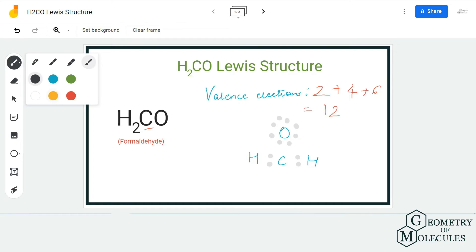So what we are going to do is shift this pair of electrons from oxygen between oxygen and carbon. Now this will create a double bond between carbon and oxygen atom, but it would also complete the octet for carbon atom as well.